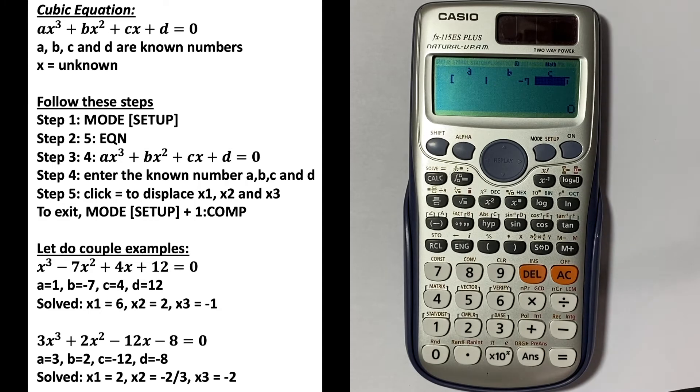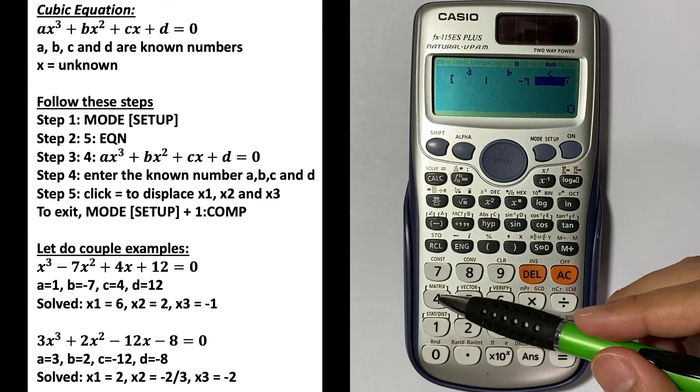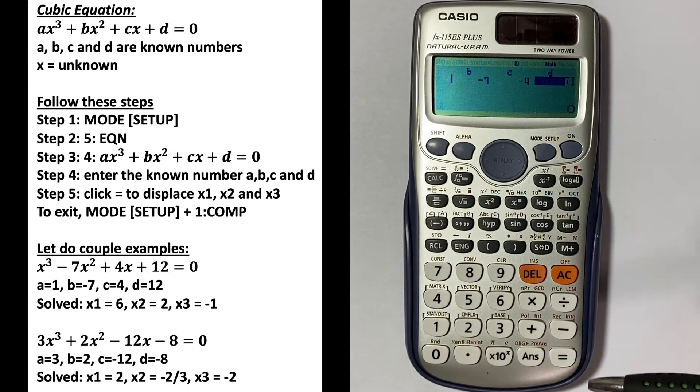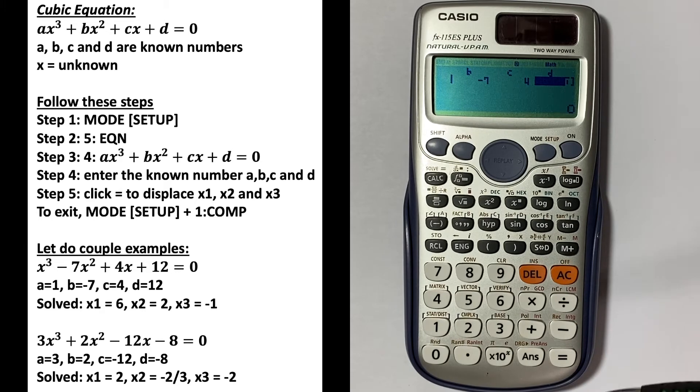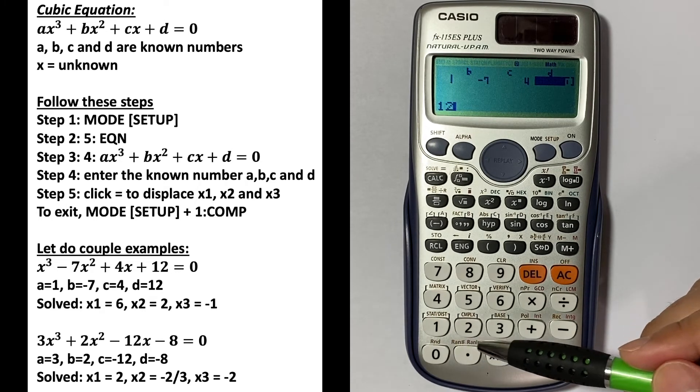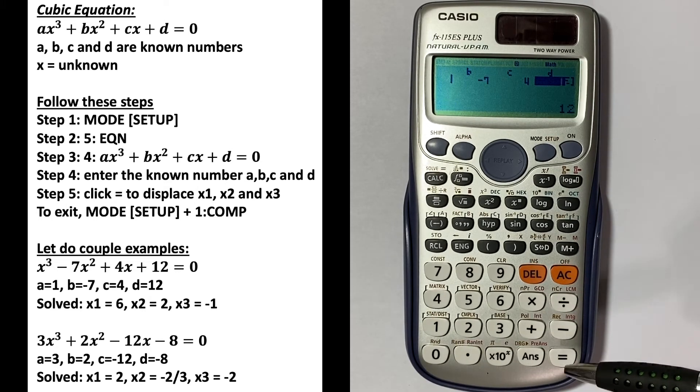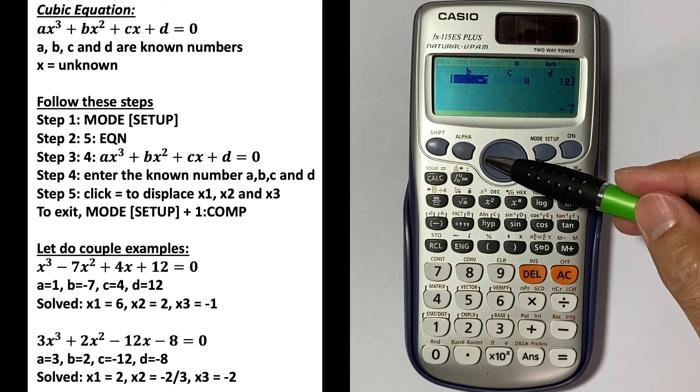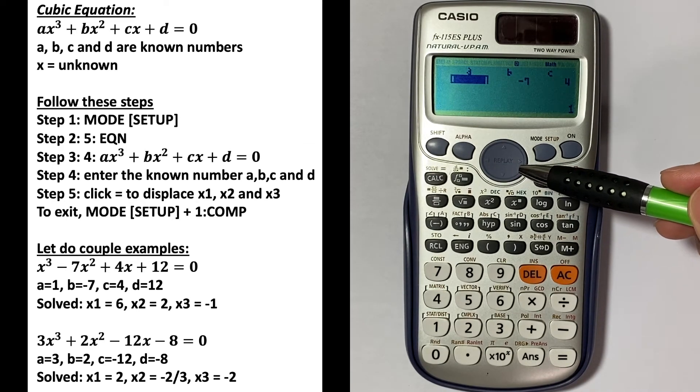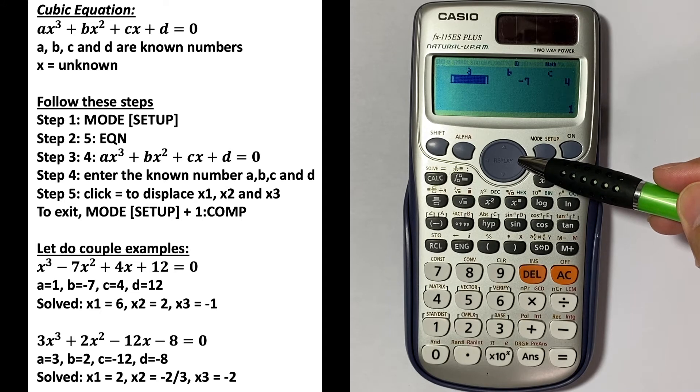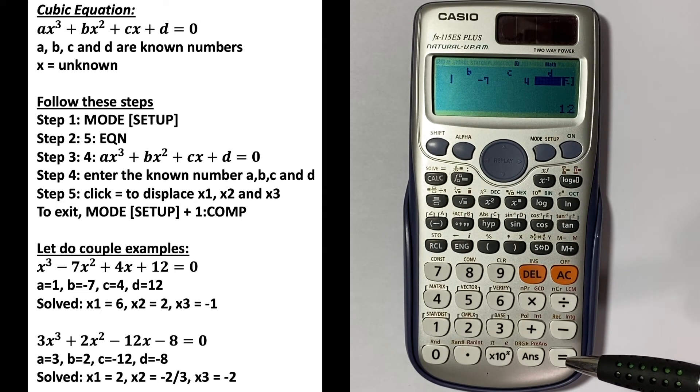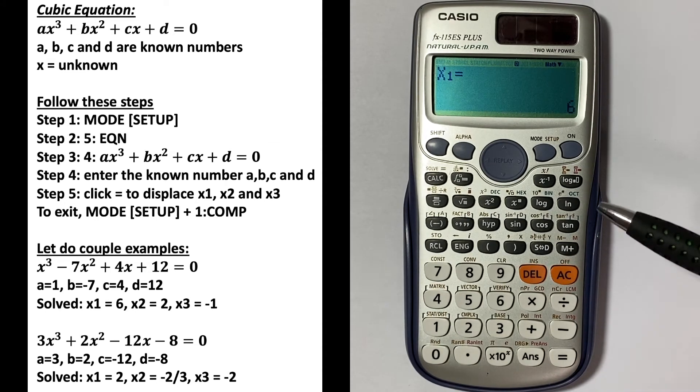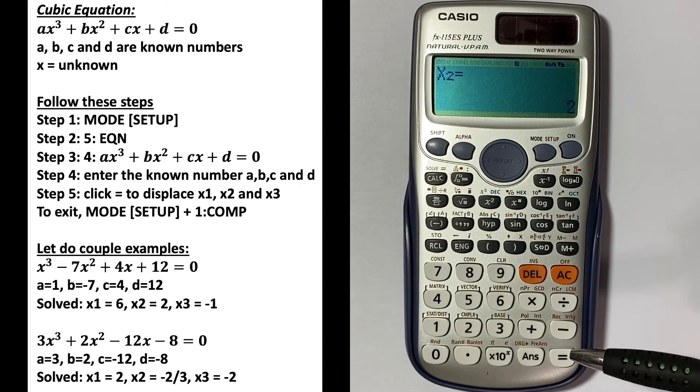Then c = 4 and d = 12. Once you have entered everything, you can check the numbers or make changes by using the cursor left or right. Once you have all the known numbers entered, just click equals and that will give you x1 = 6, x2 = 2, and x3 = -1.